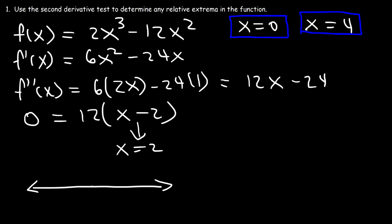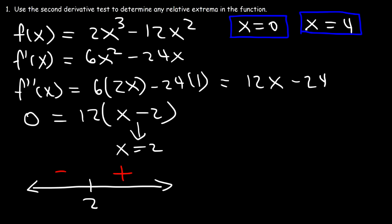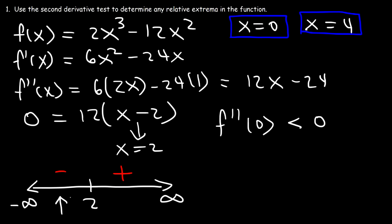Let's create a sign chart. If we plug in a test point greater than 2, like 3, into the second derivative, 3 - 2 is positive. If we plug in a number less than 2, like 1, then 1 - 2 is negative. So it's concave down between negative infinity and 2, and concave up between 2 and infinity. Therefore, the second derivative at 0 is less than 0 — it's negative — because 0 is between negative infinity and 2.